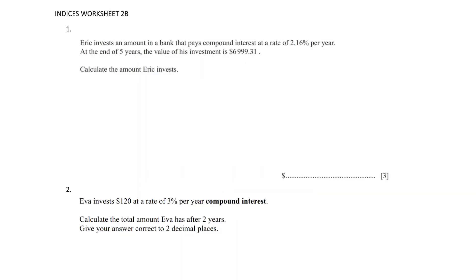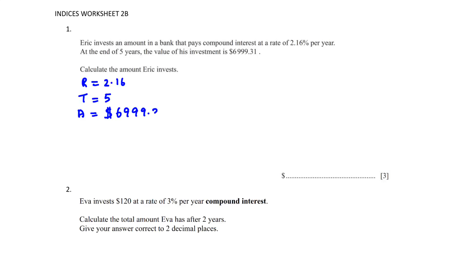Question 1: Eric invests an amount in a bank that pays compound interest at a rate of 2.16% per year. At the end of five years the value of his investment is $6,999.31. Calculate the amount Eric invests. We have been given: rate of interest = 2.16, time = 5, and the value at the end = $6,999.31.